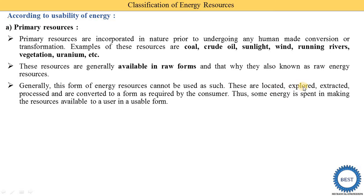So first we need to locate, explore, extract, then process, and then convert to the required form. Thus some energy is spent in making the resources available to the user in a usable form. For example, we find coal in some earthen deposits, and for removing the coal from those deposits we require some machinery — so we need to spend some energy and money.